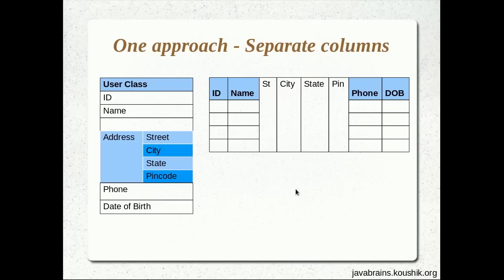This option works fine for a particular scenario: when the object inside the User class is a value object. When dealing with Hibernate, we see two kinds of objects — one is the entity, and one is the value object. An entity is something like the User class we saw earlier. User is an entity — it needs to be saved as a separate table in the database, and it is independent and contains data that provides meaning about itself.